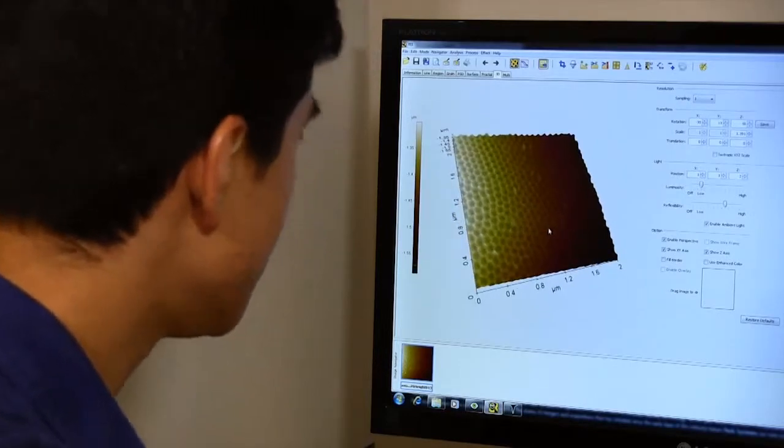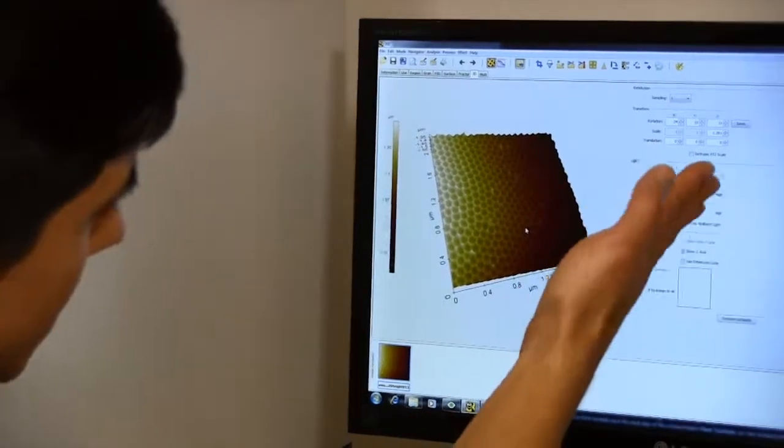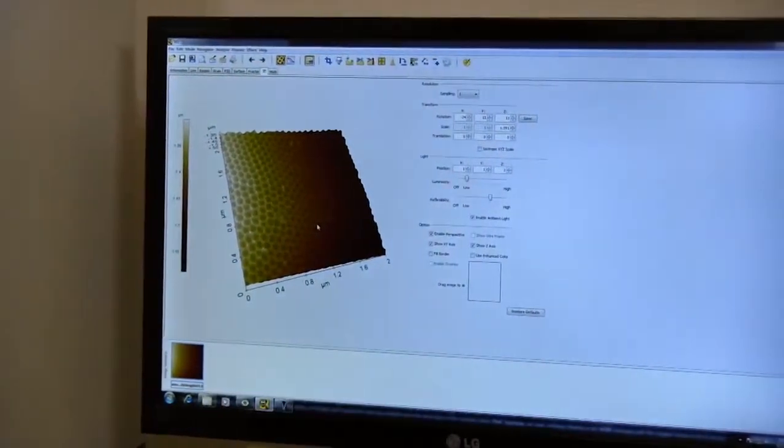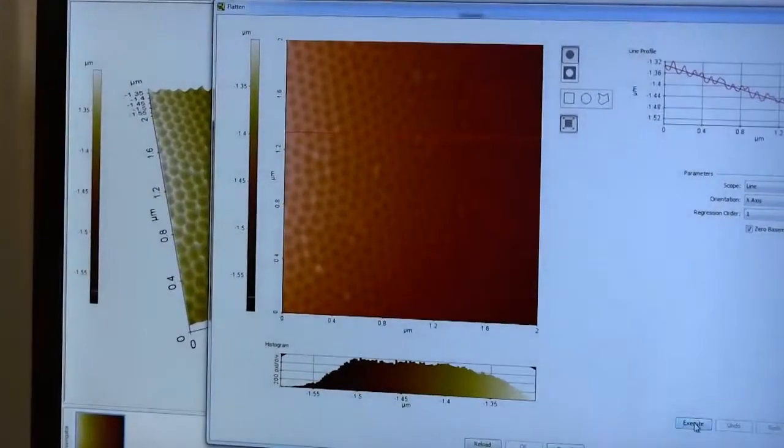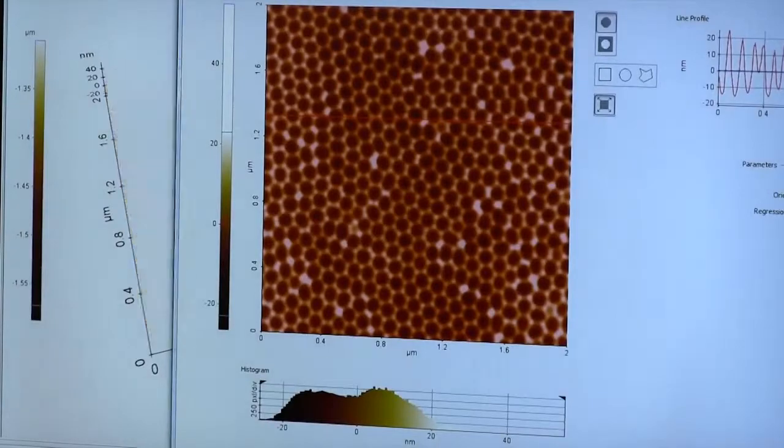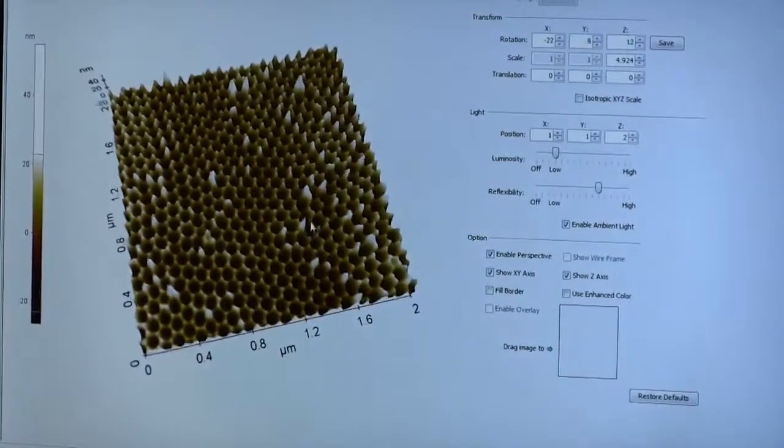So to make this easier for us to view let me just rotate the data to untilt it. And then we can look at a few of the things that a researcher studying this material might want to observe.